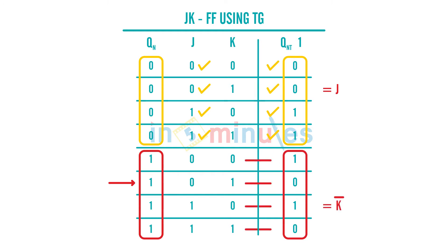So if I call my QN as my select line, when QN is equal to 0, my next stage QN plus 1 is equal to J. If my QN is equal to 1, my QN plus 1 is equal to K bar. Then it boils down to designing just a 2 is to 1 mux using TG, which we have already studied, followed by a D flip-flop.